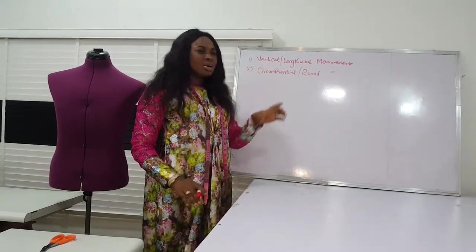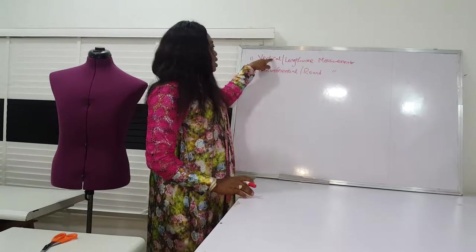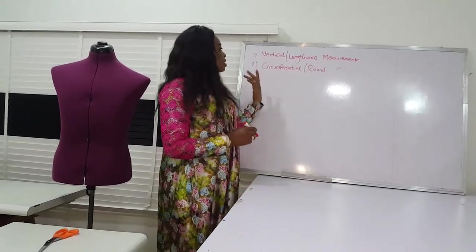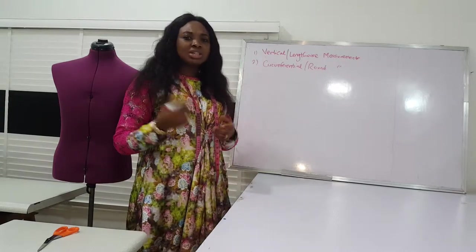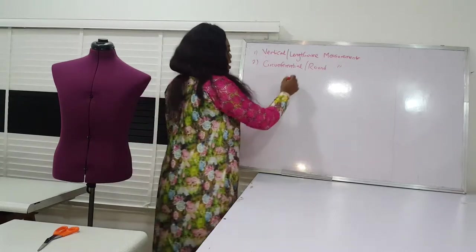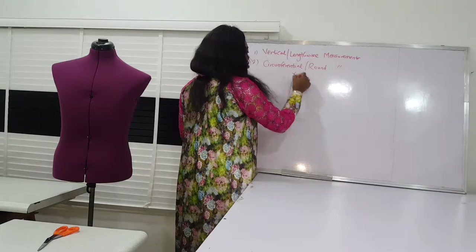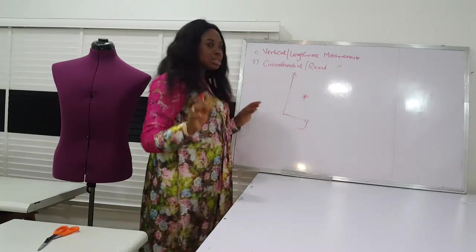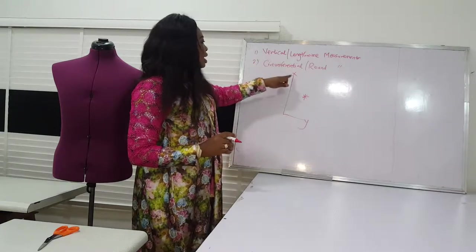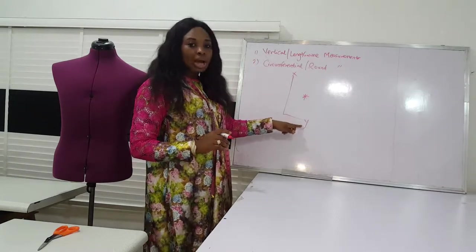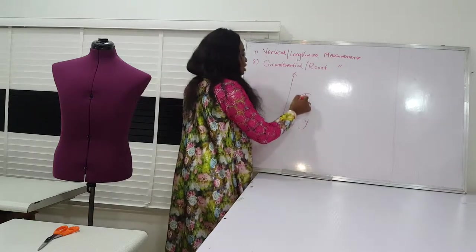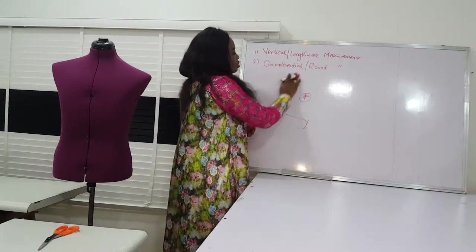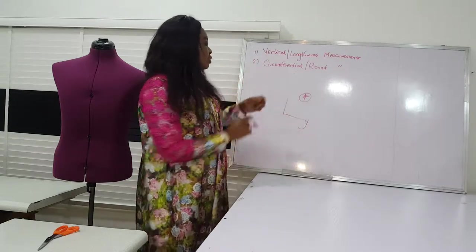You take these measurements simultaneously — you can't do without the other. They go hand in hand. For our vertical measurement, I like to compare this to graphs in school: like the x-axis and the y-axis. Take the vertical as the x-axis, while the circumferential is the y-axis, and we get the intersecting points. So you can't do without y and you can't do without x — same with the vertical and circumferential measurements.